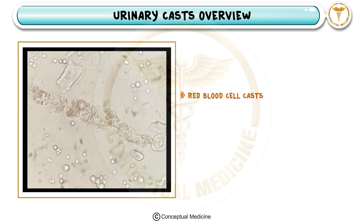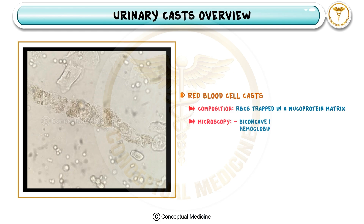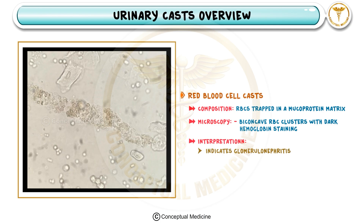Red blood cell casts form when RBCs are trapped in the mucoprotein matrix. Microscopically, these appear as biconcave cells with dark hemoglobin staining. These casts are highly specific for glomerulonephritis, a condition where the glomeruli are inflamed. They can also be seen in hypertensive emergencies where there is significant damage to the glomerular capillaries.